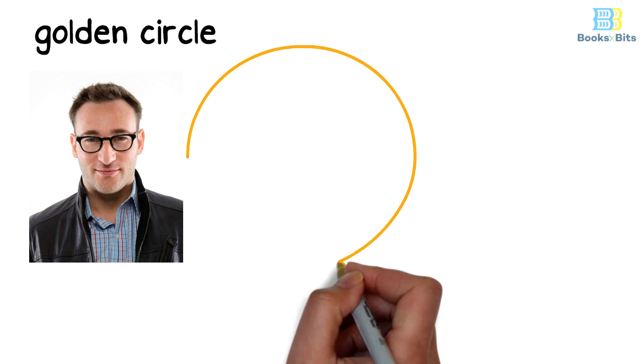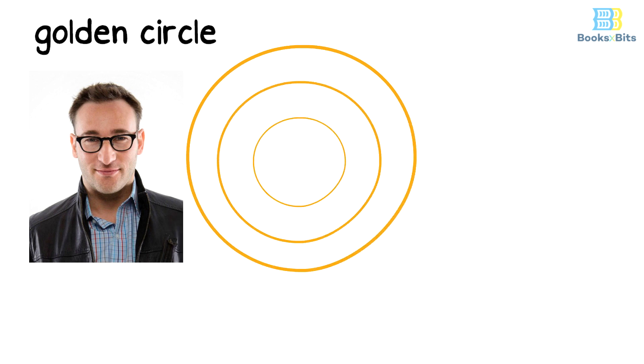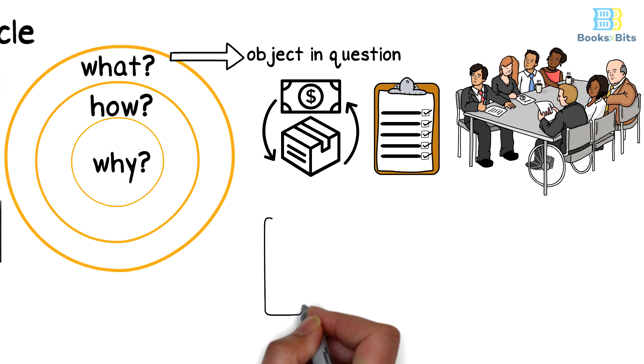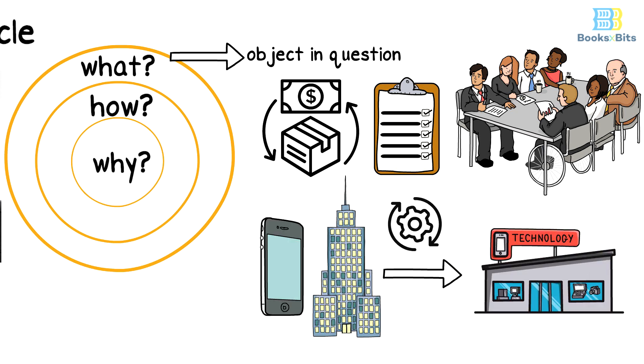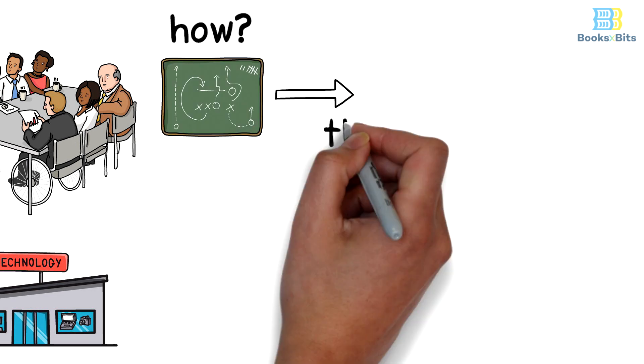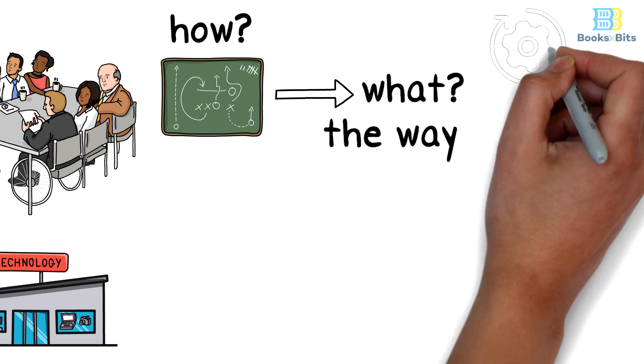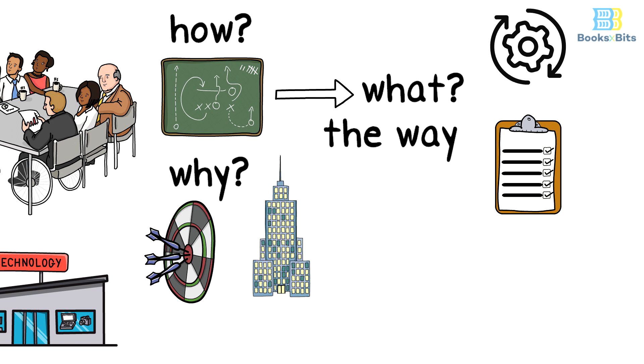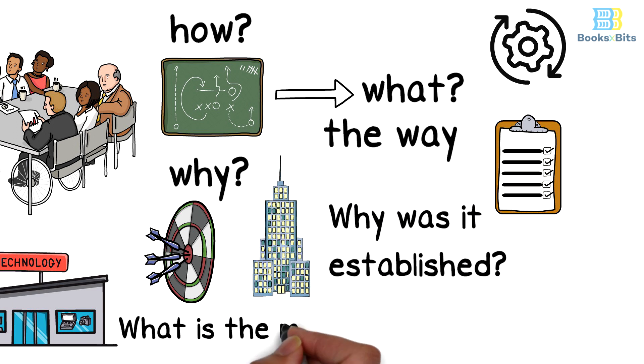The concept of the golden circle introduced by the writer Simon Sinek is based on a golden circle consisting of three concentric circles. The central circle is called Why, which is wrapped around the middle circle that's called How, and an outer circle called What. The outer circle What describes the object in question as a commercial activity or a task carried out by a team or a product that the company seeks to produce and market. The middle circle How describes the way in which the circle What is achieved. In contrast, the central circle Why describes the ultimate goal of establishing the company or organization. Why was it established and what's the main goal of its activity?